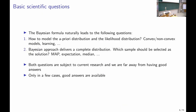The Bayesian formula naturally leads to fundamental scientific questions: how can we model prior distributions for images — should they correspond to convex or non-convex potentials, should learning be involved? And once we have a prior and a likelihood, how do we perform inference based on the posterior? Should we compute the MAP estimate, take the expectation, or use the median? These questions have been subjects of intense research for years, with deep learning being one method that can tackle learning prior distributions, though we are still far from having complete answers.